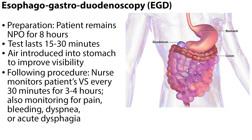To prepare for an EGD, the nurse instructs the patient to remain NPO for 8 hours prior to the test. The test usually lasts 15 to 30 minutes and involves introducing air into the stomach to improve visibility, causing the patient to feel pressure or fullness. Following the procedure, the nurse monitors the patient's vital signs every 30 minutes for 3 to 4 hours while also monitoring for signs of pain, bleeding, dyspnea, or acute dysphagia.